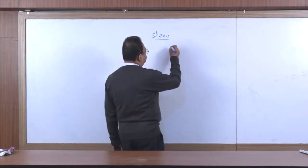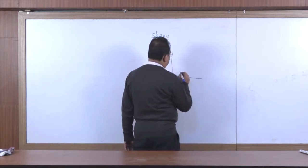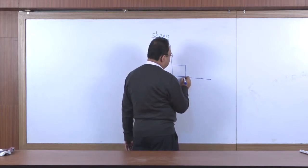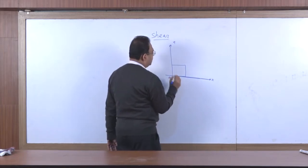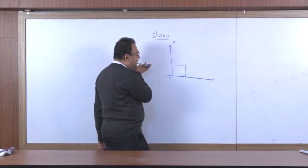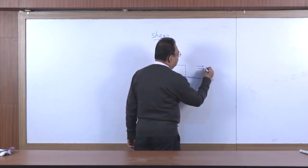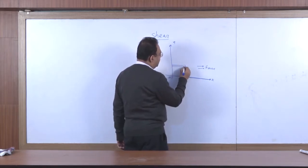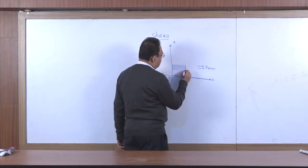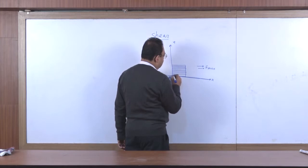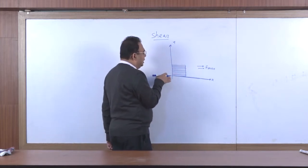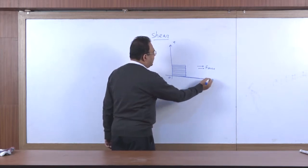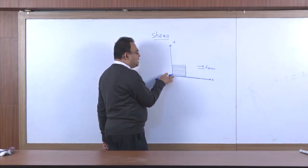Let us take an example. Suppose we are considering a two-dimensional rectangular object. This object lies on the x-axis. Initially, let us consider that we are applying the force along this x-axis. If we consider this object as consisting of a collection of layers, then when this force is applied, all these layers will slide one after another. There will be no sliding of the plane attached to the reference plane, because we are considering shearing with respect to the x-axis.